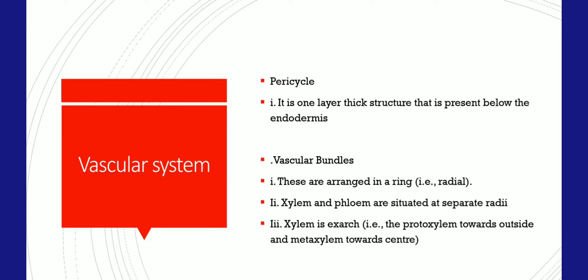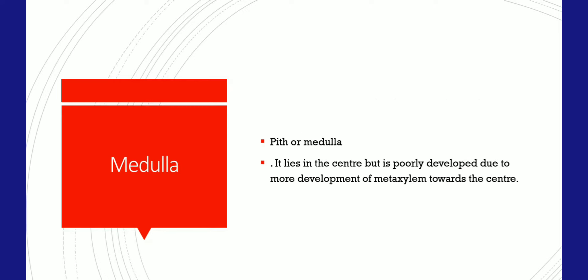At the central part, the medulla or pith region is present, made up of parenchymatous cells. The medulla lies in the center but is poorly developed in dicot roots due to more development of metaxylem towards the center.